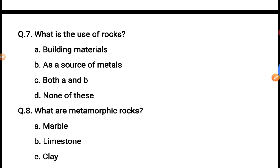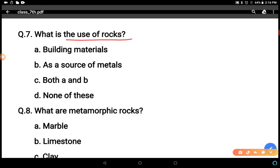What is the use of rocks? Options: building material, as a source of metals, both A and B, none of these. Rocks are used to make buildings, right? And we draw metals like gold, silver, etc. Metals are minerals and we extract minerals from the earth which is made up of rocks. So both A and B - C is the correct answer of question number seven.